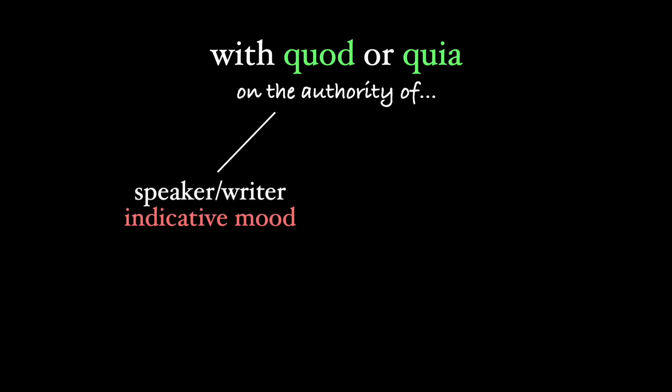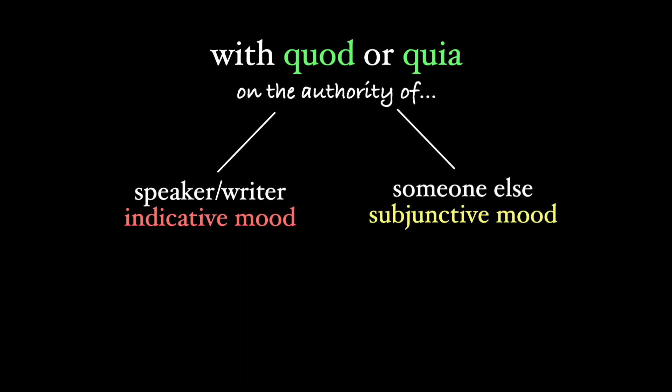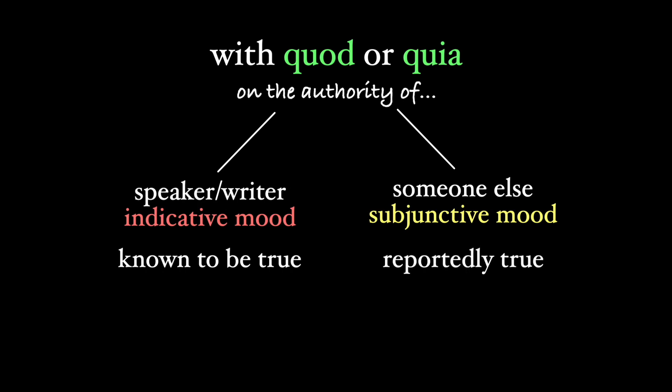When we use quod or quia, the difference between using the subjunctive or indicative moods comes down to a question of authority. If the person speaking or writing is the source of the reason, then we use the indicative mood, but if someone else is the source of the reason, then we use the subjunctive. The indicative mood is used for reasons that are fact and known to be true, while the subjunctive is used for reasons that are hearsay, or reportedly true, but may not be.